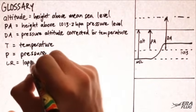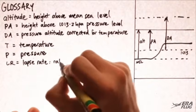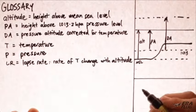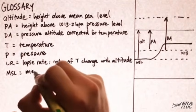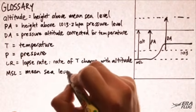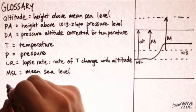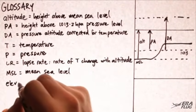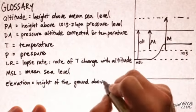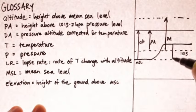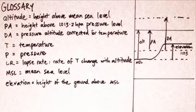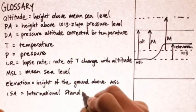Lapse rate is the rate of temperature change with altitude. MSL is mean sea level. Elevation is the height of the ground above mean sea level. ISA is the International Standard Atmosphere.